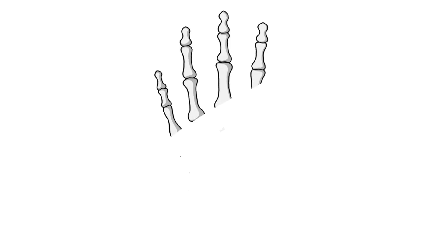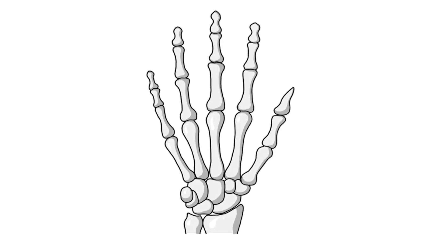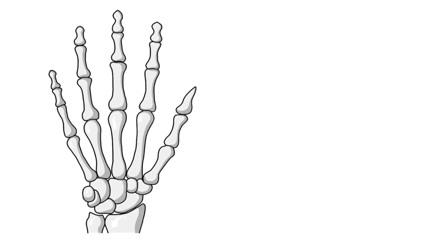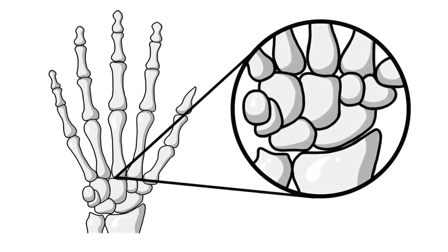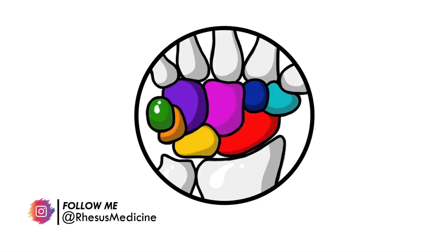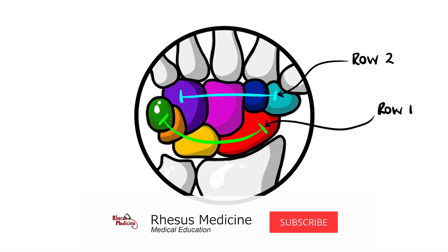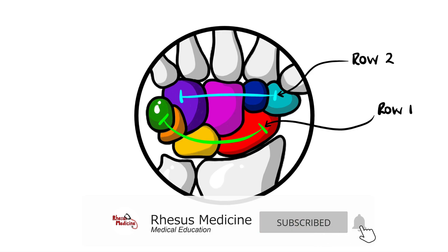The bones of the hand, and particularly the wrist, can be tricky to remember. But this mnemonic will help you remember not only the names, but also their positions. The wrist is made up of eight bones, roughly in two rows of four.